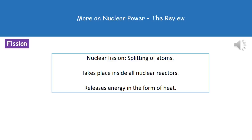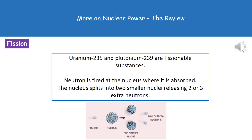It's very easy to confuse fission with another process we're going to look at in a couple of lessons time. Nuclear fission occurs inside all nuclear reactors and releases quite large amounts of energy in the form of heat. Inside the nuclear reactor we use one of two main fuels: either Uranium-235 or Plutonium-239, because they're both what's called a fissionable substance.